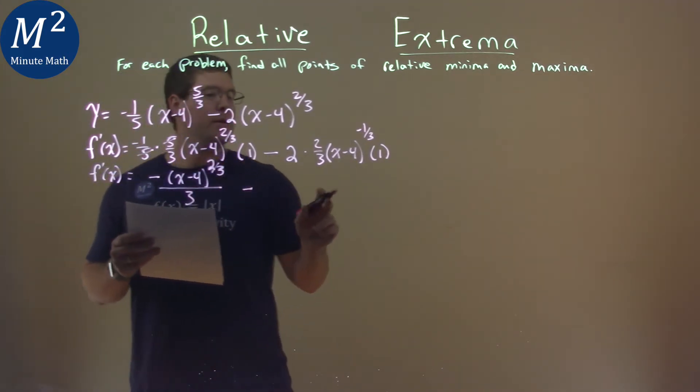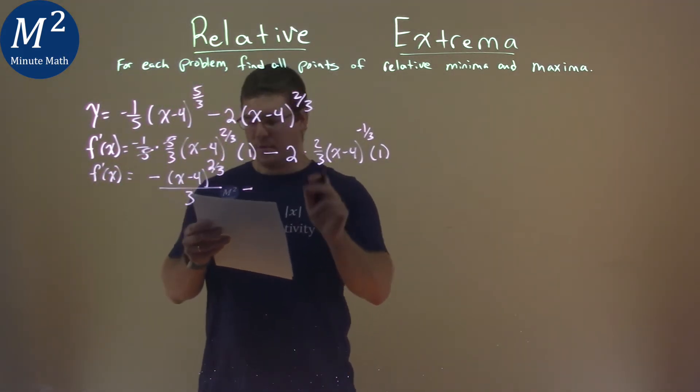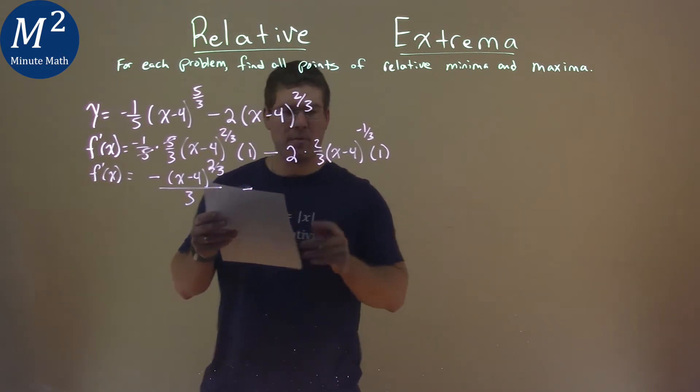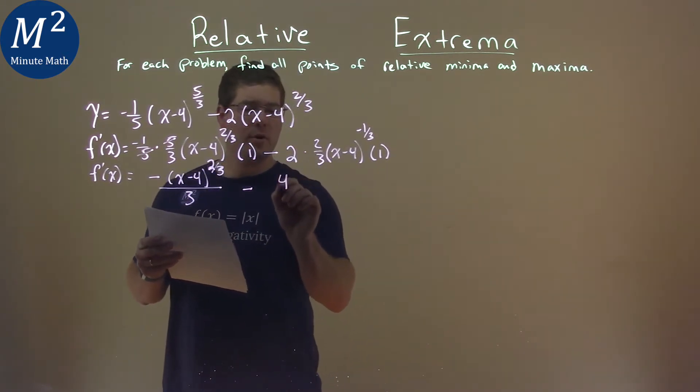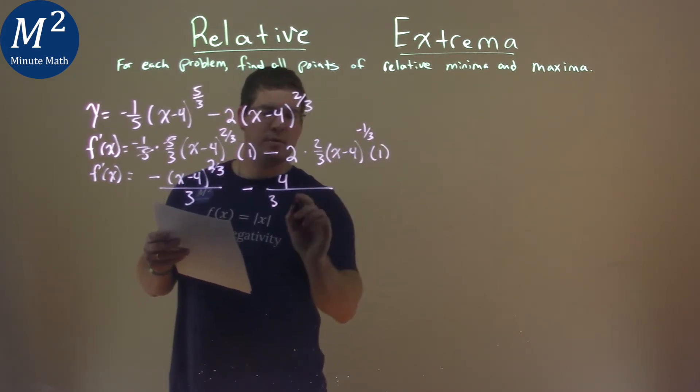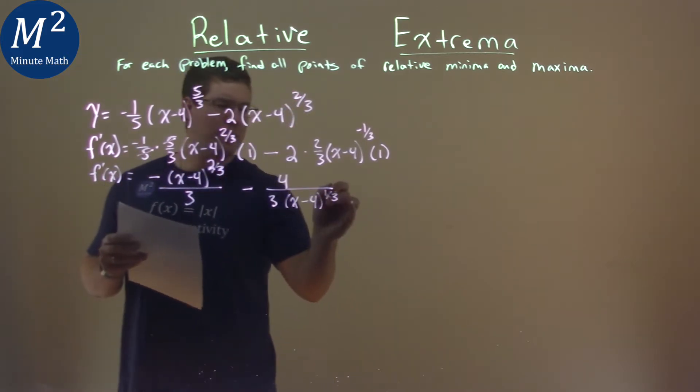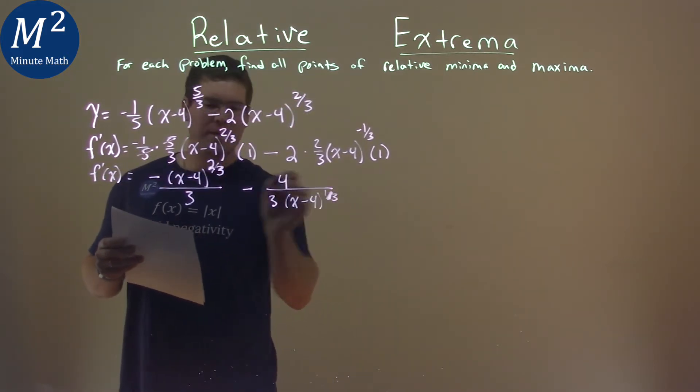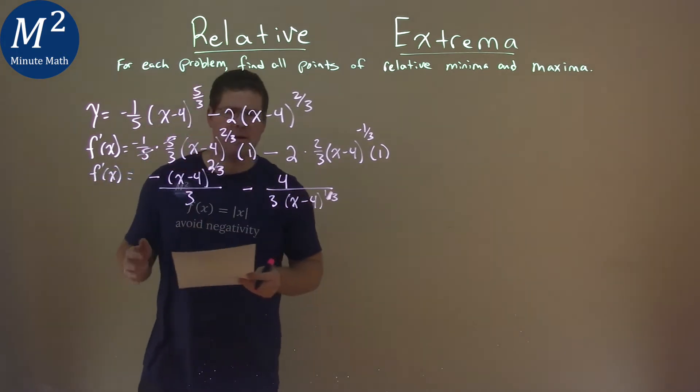We subtract here. Simplify this out. Two times two is four. Okay, so two times two is the four in the numerator. Denominator is still that three, and we bring down this x minus four, x minus four to the one-third power, and notice I'm going to leave it as one-third power because I find it easier to connect these two like that instead of making that cube root.